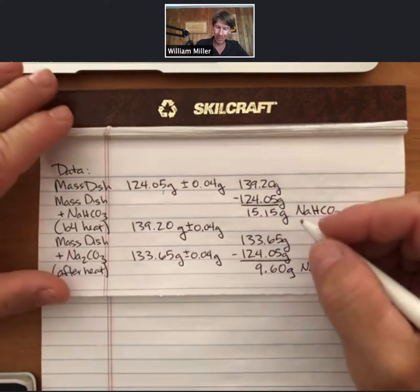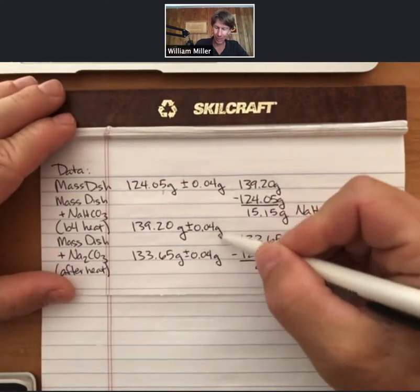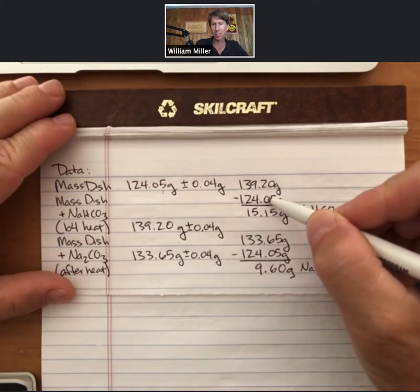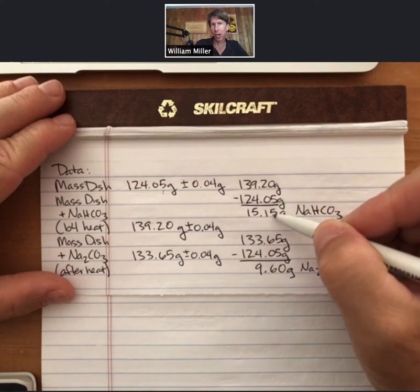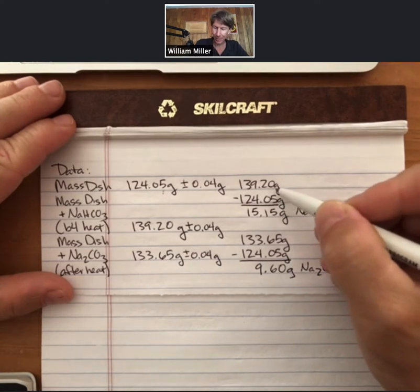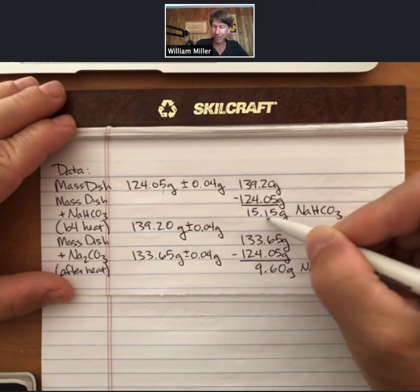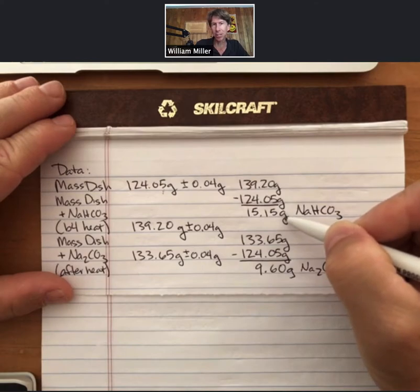But then propagation of errors says, if we know the errors for each of these numbers, then when we do math with these numbers, how does the error propagate through the calculation? In the introduction to the lab, I've shown you an example of how the error propagates through this calculation to get 15.15 grams of sodium bicarbonate.